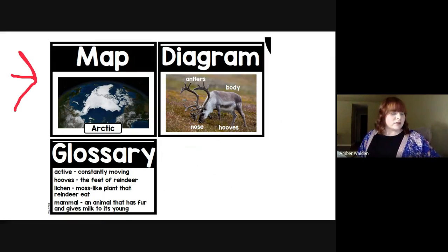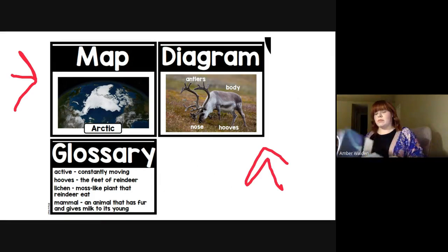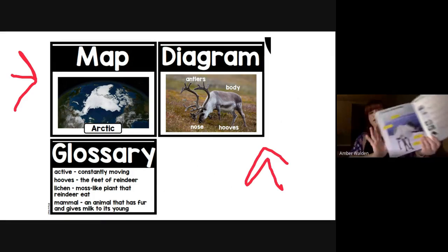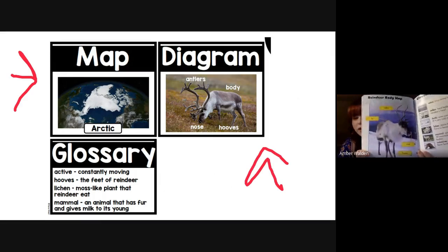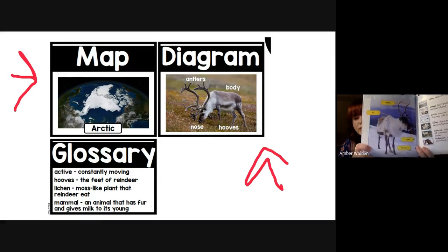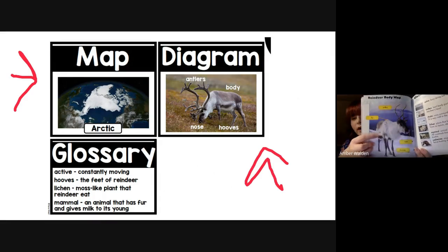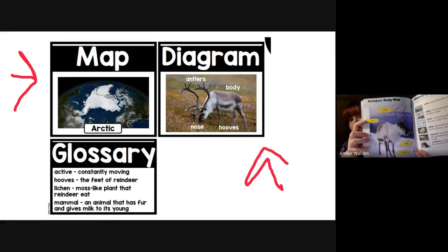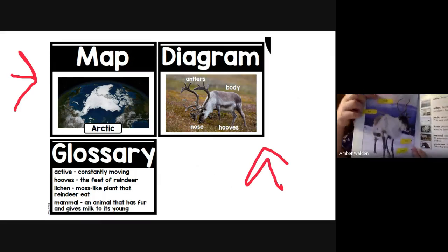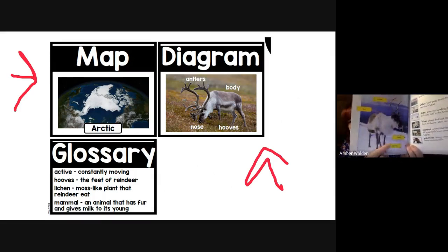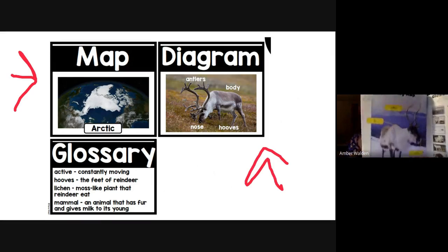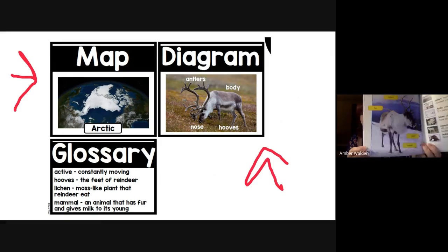So our next word is the word diagram. That word right up there is diagram. So this is a diagram. A diagram just shows a picture and it has a lot of labels explaining what is happening in the picture or what the picture is of. So we have a diagram of a reindeer and it shows his fur and his antlers and his hooves and his nose. So it shows all of the labels on the diagram.